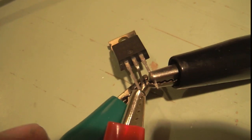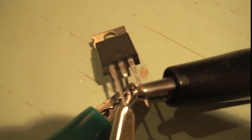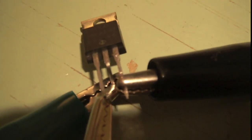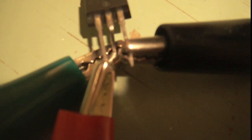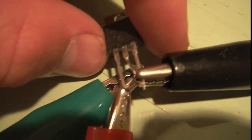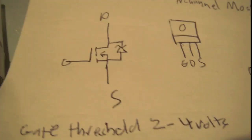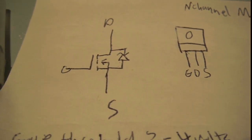Hey guys, so today we're going to be talking about the humble N-channel MOSFET. Here you see one in real life — it is the IRF640. It's in this TO220 package, which is pretty common for MOSFETs. Usually to identify them, they have the prefix IRF on them. The 640 is a pretty common one.